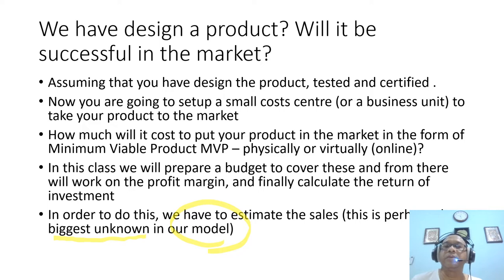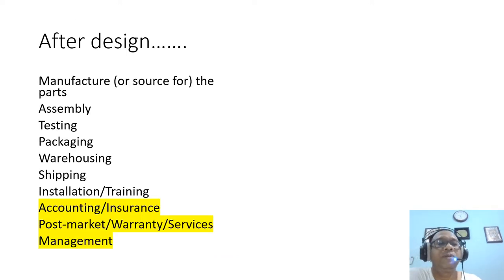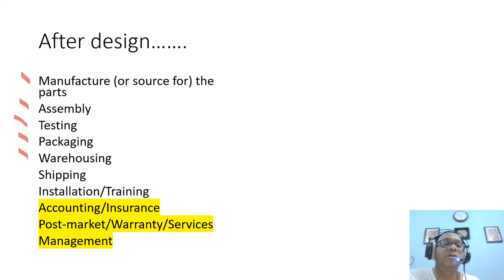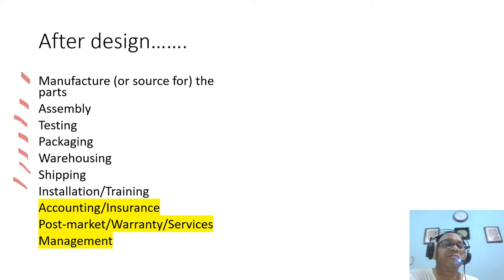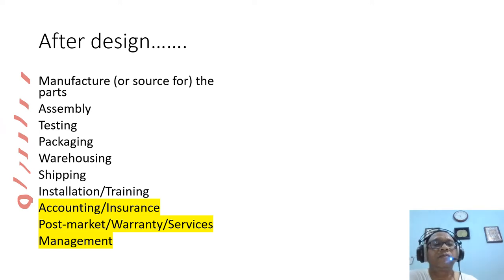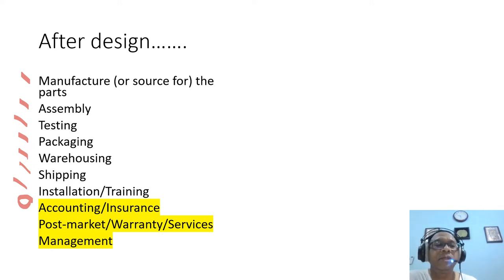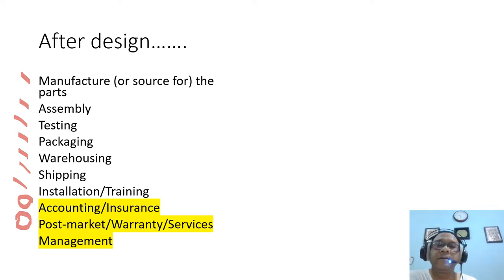When you have designed something, you have to manufacture it, assemble it, test it, package it, put it in a warehouse, and then ship it. You have to install it, carry out training, prepare accounting reports, arrange insurance, and manage post-market activities — including warranty and repair services. You also need a management team to manage all these processes. There are a lot of things to do, and these are all sources of cost.